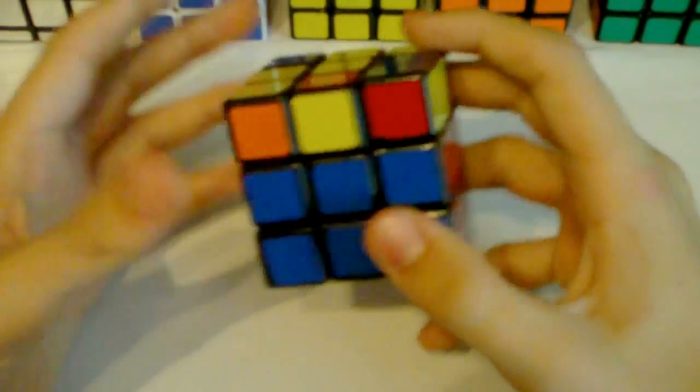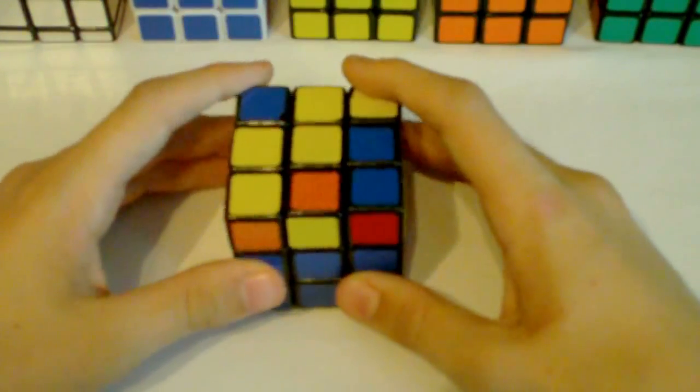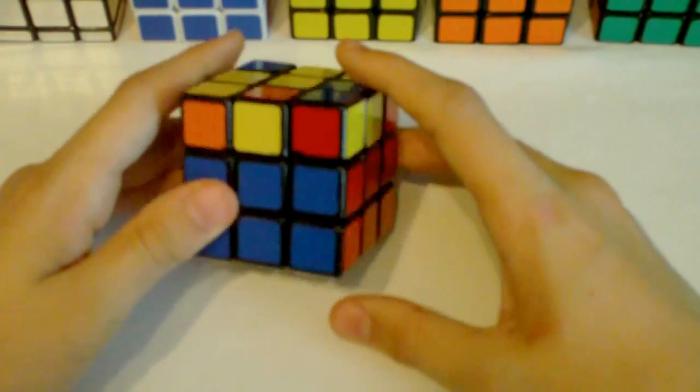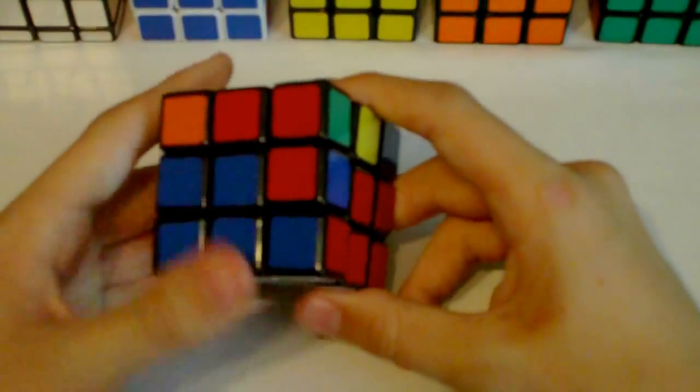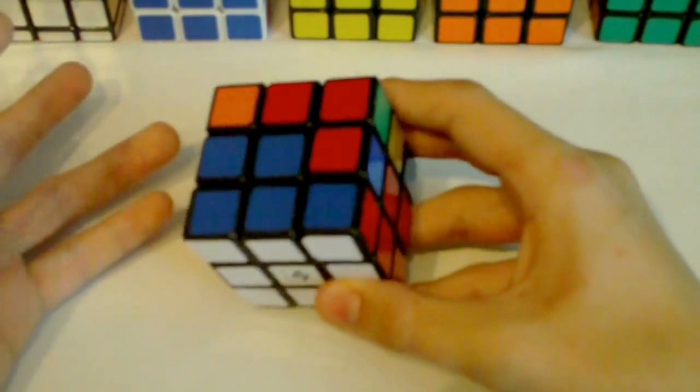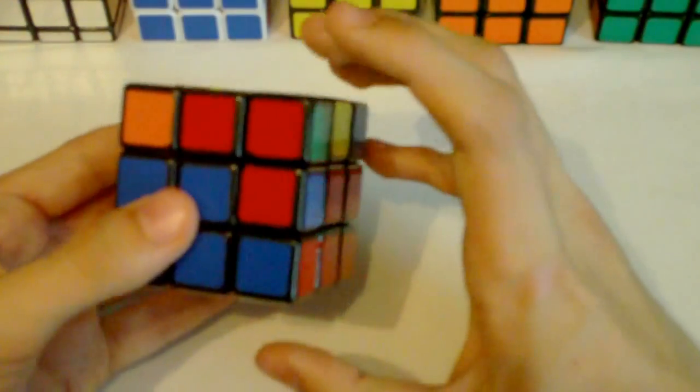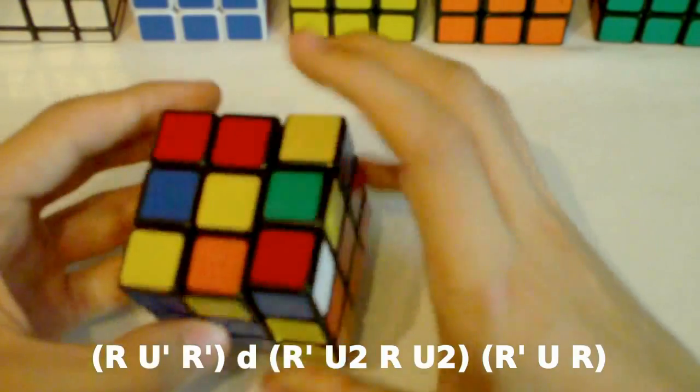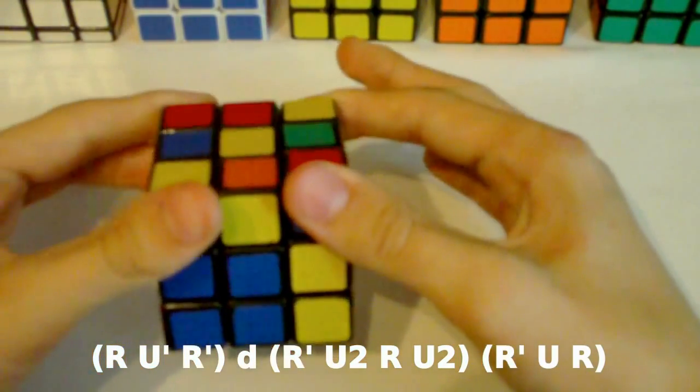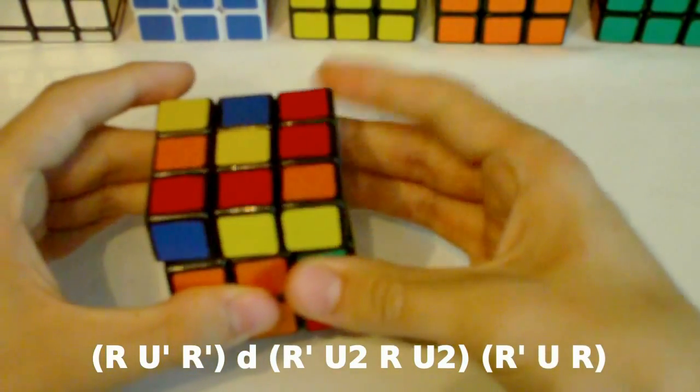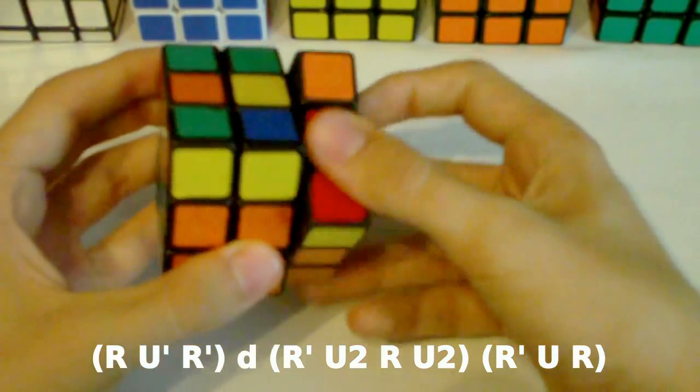Now if you want to solve that case in as few moves as possible, then that's definitely the right algorithm for you. But I actually prefer another way of solving this case. This is not really an algorithm, it's more of an intuitive way of solving this, but just in kind of a smarter way. So first I do R U' R' so then I have both of these pieces here in the top layer. Then I do lowercase d and now I can match up these two pieces and then I just insert the F2L pair.